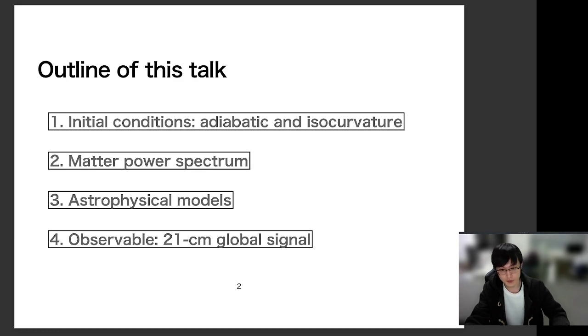This is an outline of this talk. So at first, I introduce different modes of the initial conditions for matter fluctuations, namely adiabatic mode and isocurvature mode. Then I talk about the matter power spectrum induced by these different initial conditions.